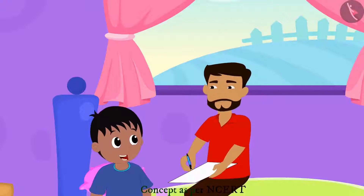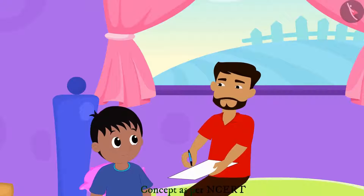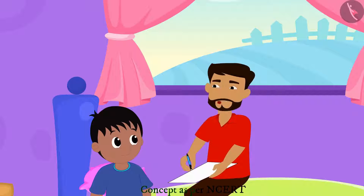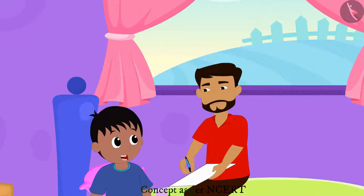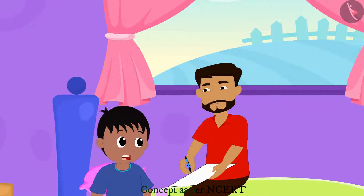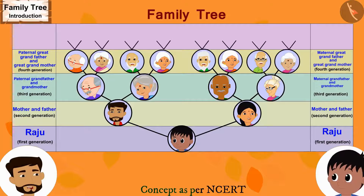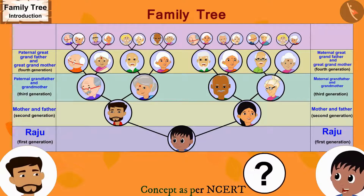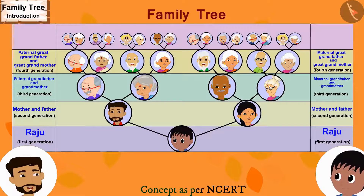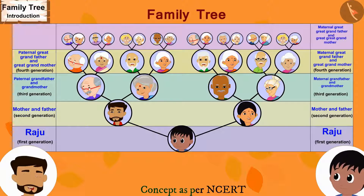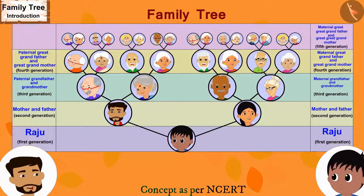Raju is amazed but again assumes the family tree is now complete. The father says no — yet another generation needs to be added: the grandparents of his maternal and paternal grandfathers and grandmothers. Raju becomes thoroughly confused. The father says he will quickly add them, explaining these are Raju's maternal great-great-grandfather and great-great-grandmother, and his paternal great-great-grandfather and great-great-grandmother.